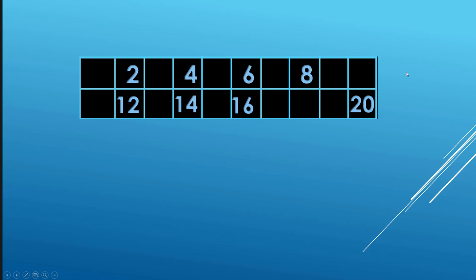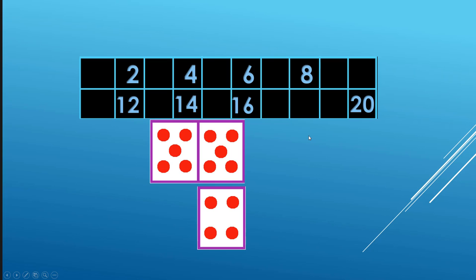Two times five is ten. Two times nine is eighteen. Next one. Two times seven is fourteen.